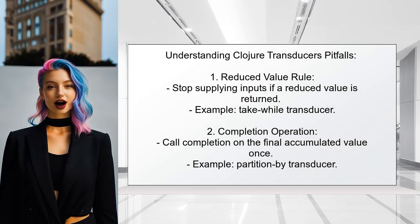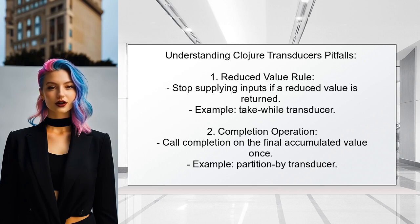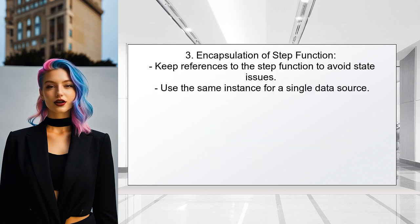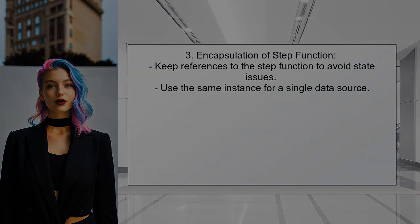Here is a summary of the important rules for using Clojure transducers safely. First, if a step function returns a reduced value, no more inputs should be supplied — for example, the take-while transducer stops processing once a condition fails. Second, a completing process must call the completion operation on the final accumulated value exactly once, as seen with the partition-by transducer. Lastly, references to the step function must be encapsulated to avoid state issues across threads, meaning you should use the same instance for processing a single data source.